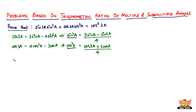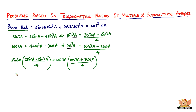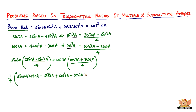Substituting, we get: sin(3a)·[(3·sin(a) − sin(3a)) / 4] + cos(3a)·[(cos(3a) + 3·cos(a)) / 4]. Taking out the common factor of 1/4, and expanding inside, we get: sin(3a)·3·sin(a) − sin²(3a) + cos²(3a) + cos(3a)·3·cos(a).